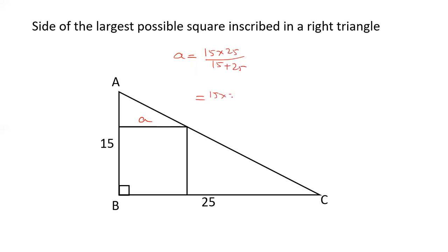15 into 25 upon 40. 5 into 45, 3 into 15. 75 by 8, so 9.375. This is the side of the square.